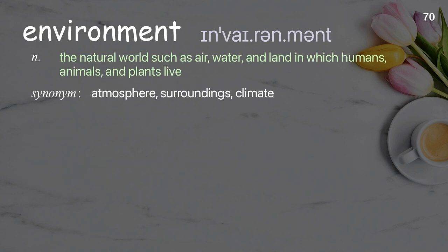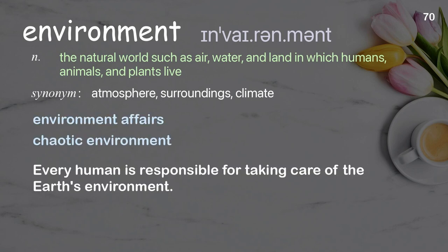Environment: the natural world such as air, water, and land in which humans, animals, and plants live. Examples: environment affairs, chaotic environment. Every human is responsible for taking care of the Earth's environment.